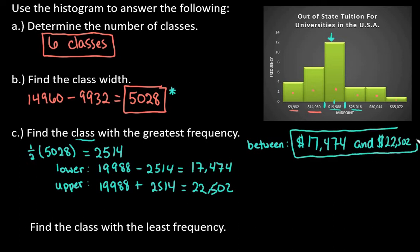We can say that out of our colleges that we surveyed or looked at, the out-of-state tuitions, the majority of them, the highest frequency, were values that fell between $17,474 and $22,502.